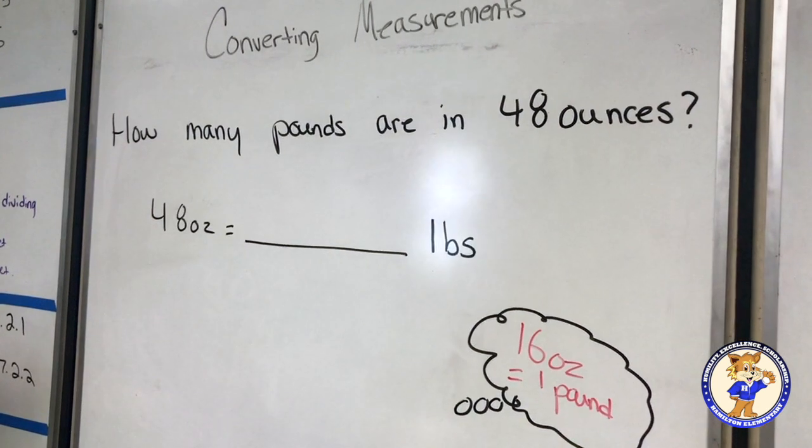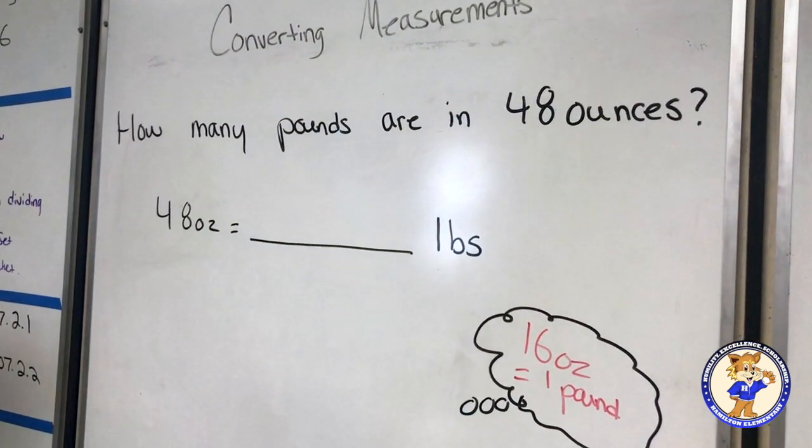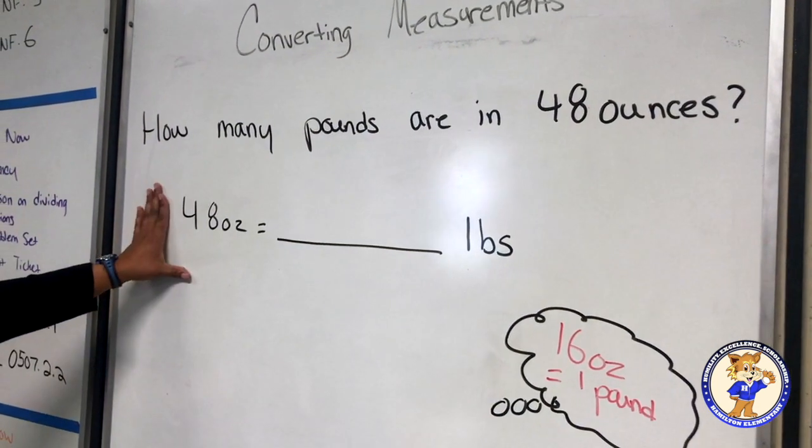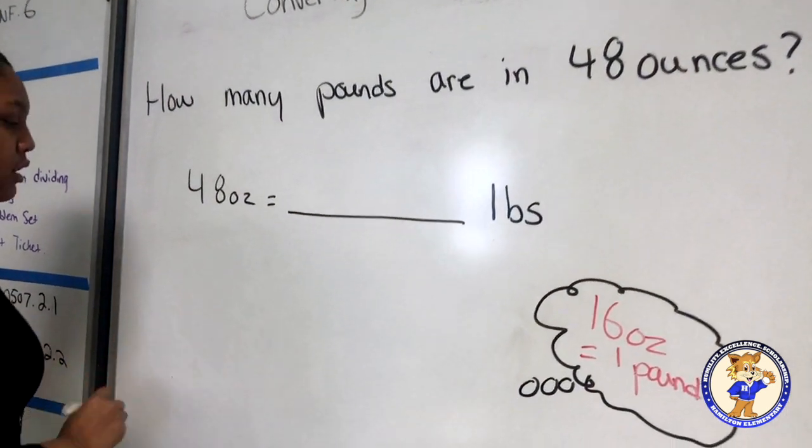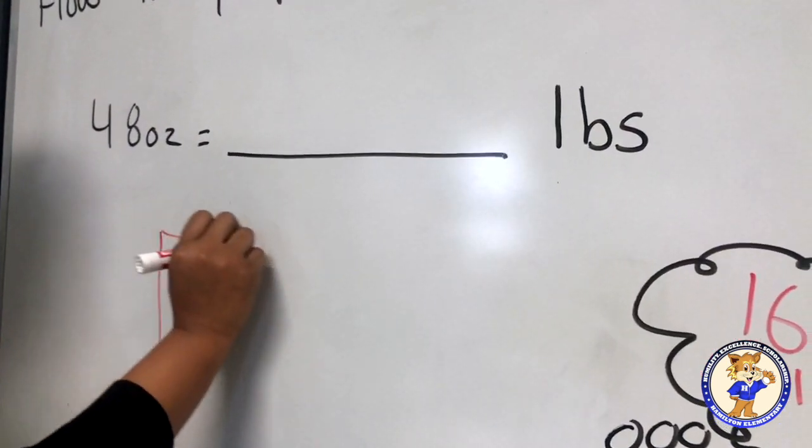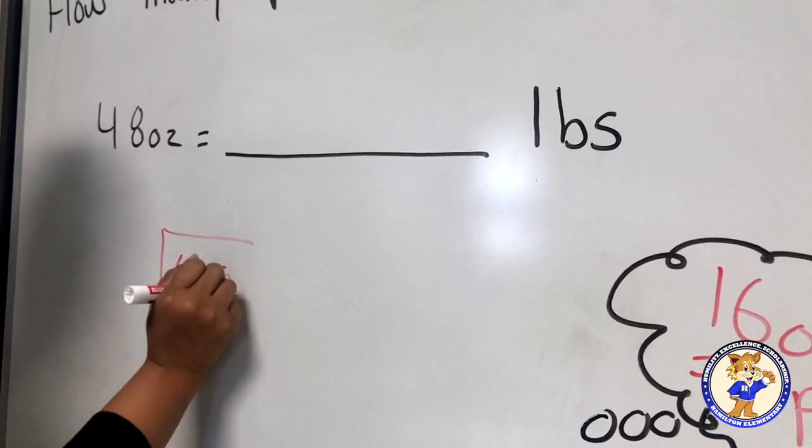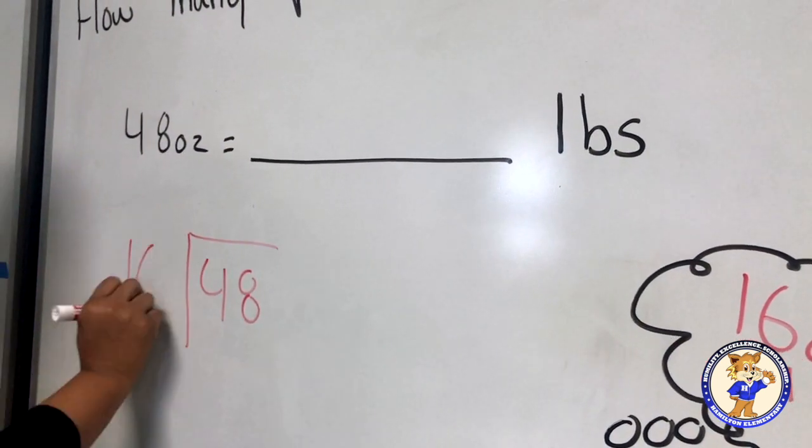So now that I know that little bit of information, the next thing I'm going to do is I'm going to take 48 and I'm going to divide it by 16.